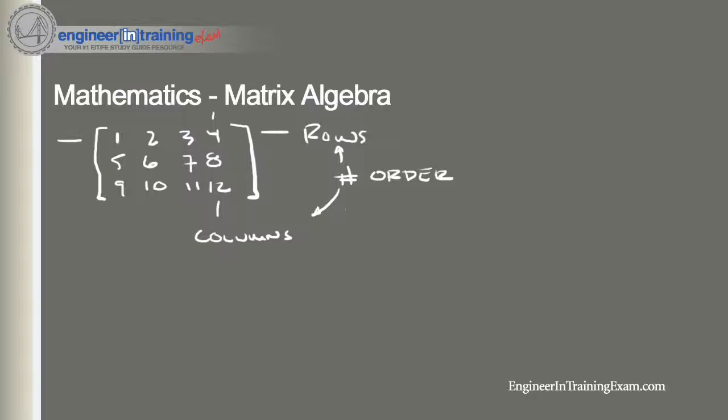So we would say that the order or dimension of this matrix is 3 by 4, because there's three rows and four columns.